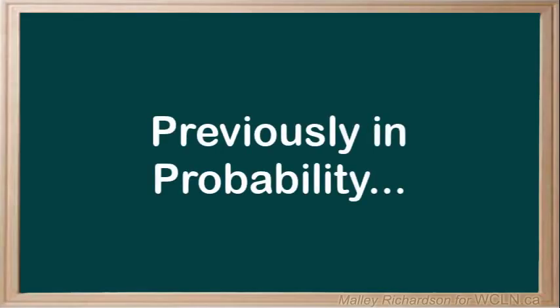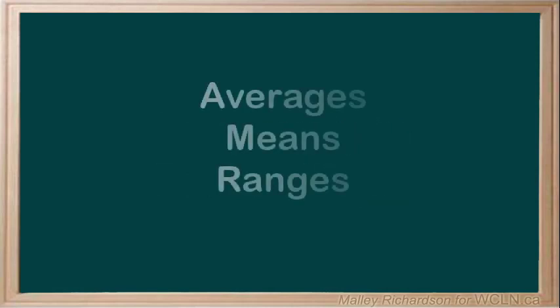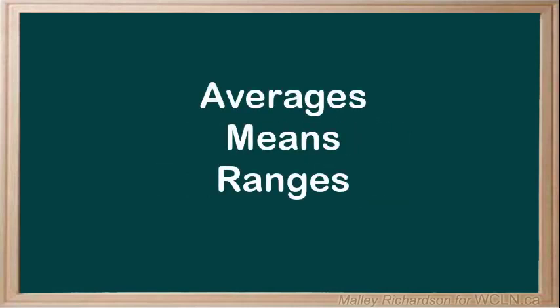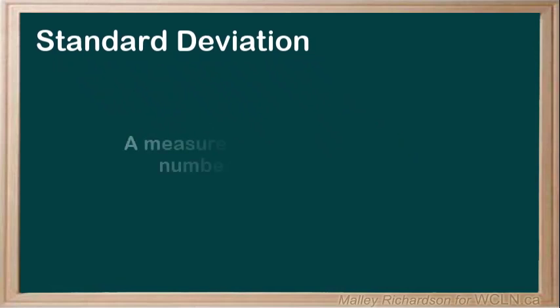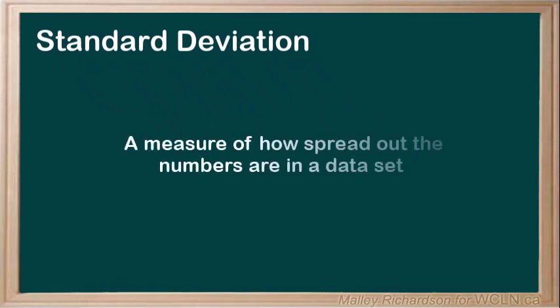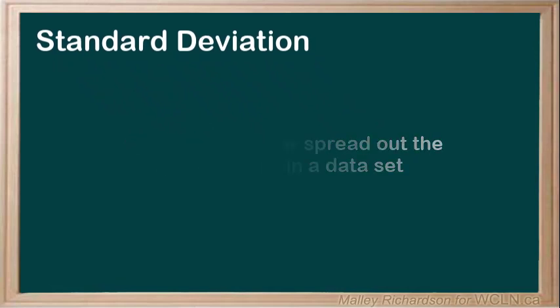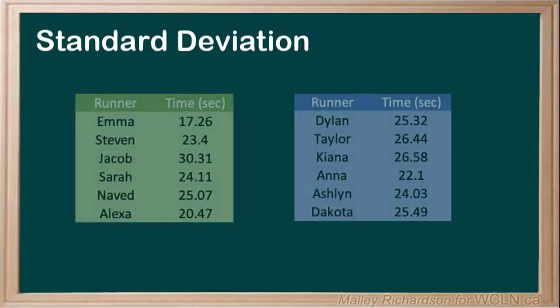In previous videos, we learned about the characteristics of datasets, like averages, means, and ranges. Another important characteristic of data is standard deviation. Standard deviation is a measure of how spread out the numbers are in a dataset. To make this clearer, let's have a look at an example.